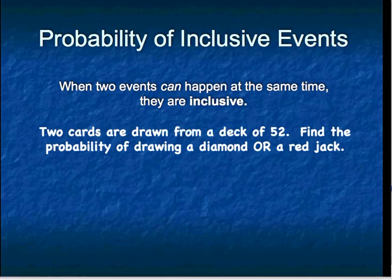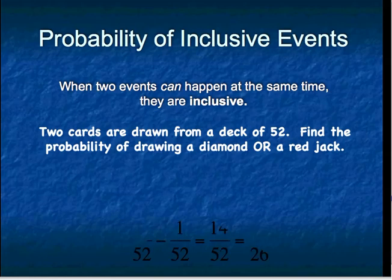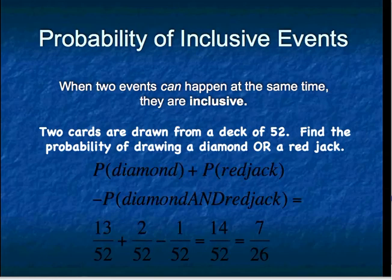We have the problem that we're going to draw two cards from a deck of 52. We'd like to find the probability of drawing a diamond, or this time one of those two cards would be a red jack. So we find the probability of drawing a diamond, which is 13 out of 52. We could just have a red jack — there are two of them, the jack of diamonds and the jack of hearts — so that probability is 2 out of 52.